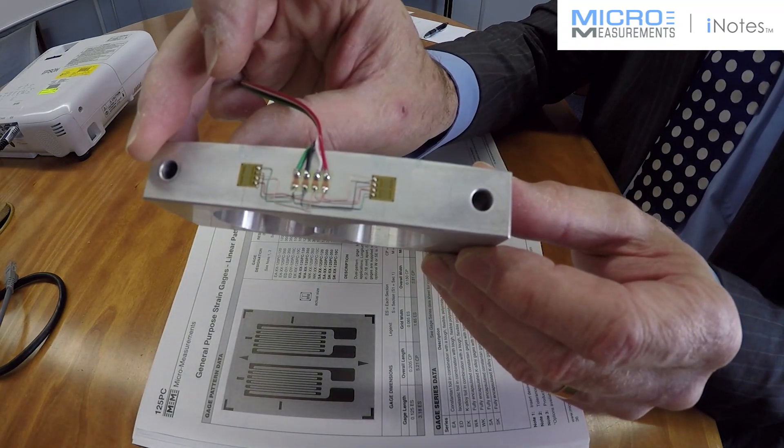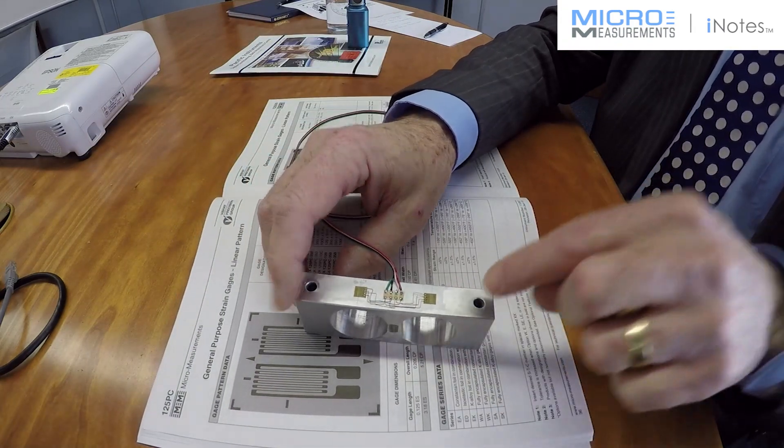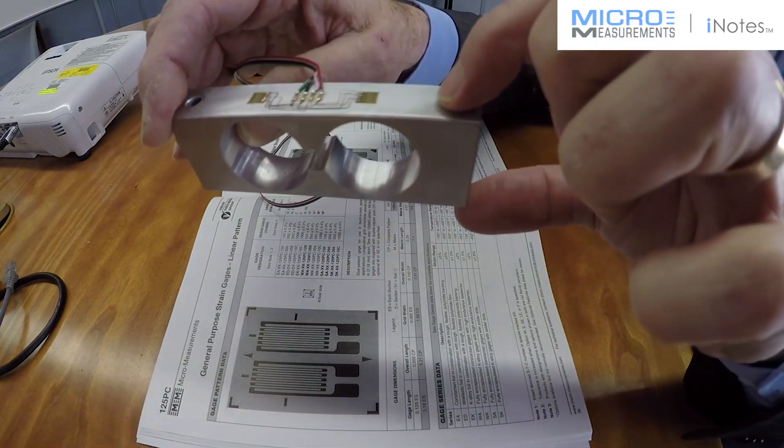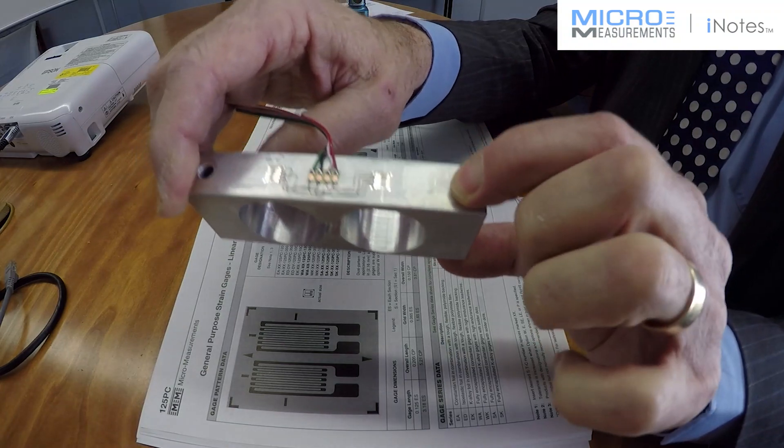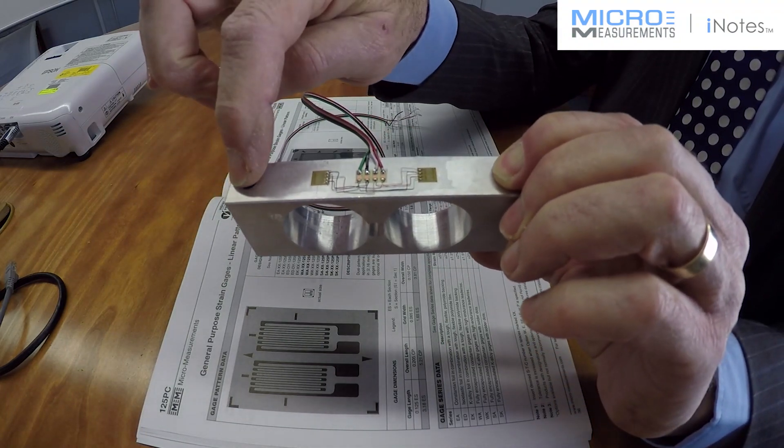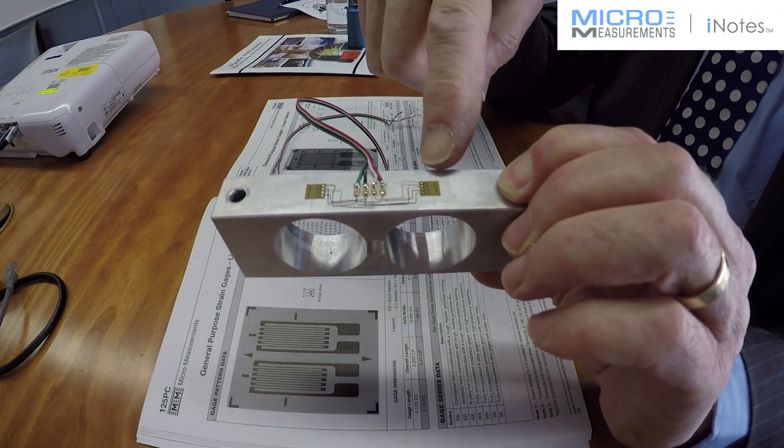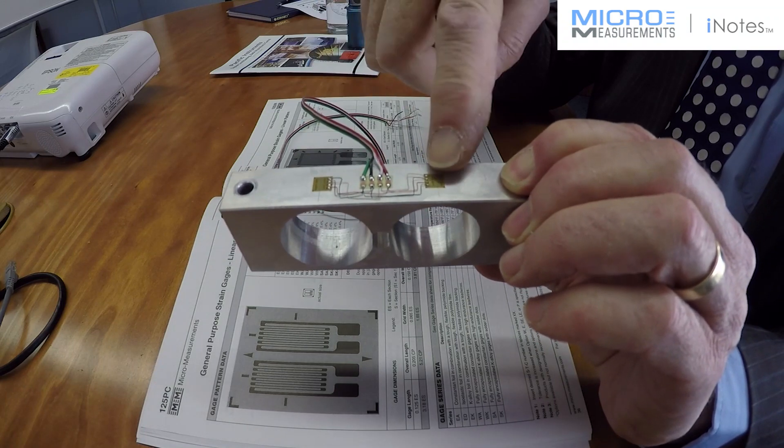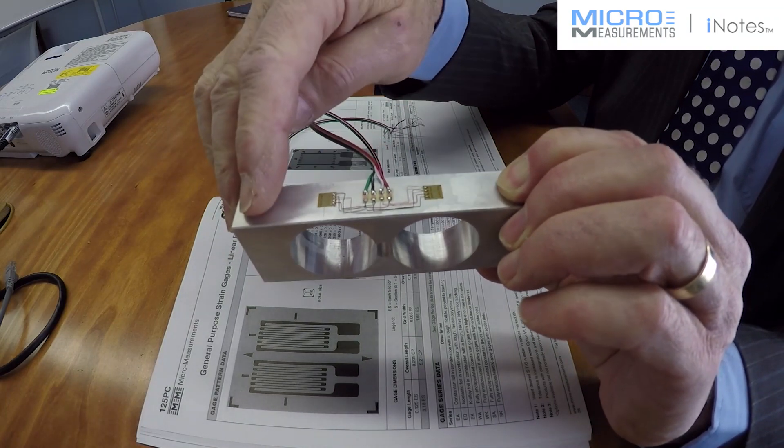You can see that is a double linear strain gauge and what will happen is we will bolt the load cell through here and then apply the load here. It will put it into bending and these gauges will take effect of two conditions that will occur when we do that.